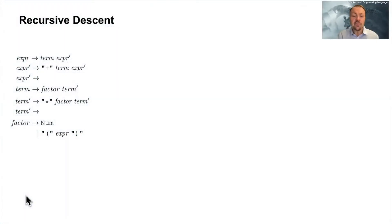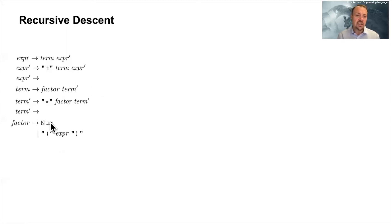Welcome back everyone to the series about compilers and programming languages. Today I'm going to talk about recursive descent parsing and top-down parsing. If you haven't watched my previous videos on context-free grammars and eliminating left recursion, please do that first. This is an example grammar with additions, multiplications, numbers and parentheses, and there is no left recursive term as you can see.